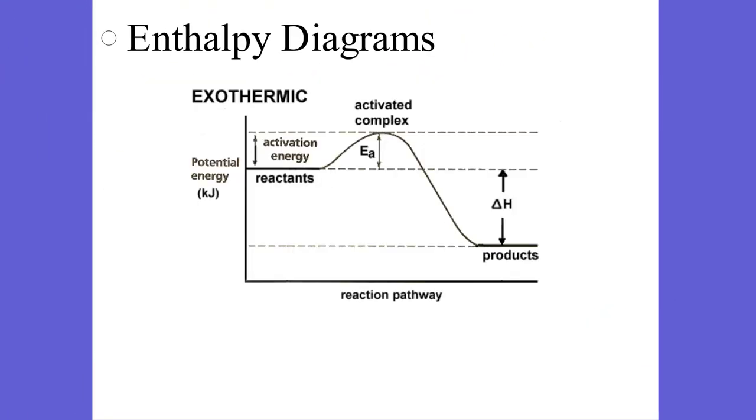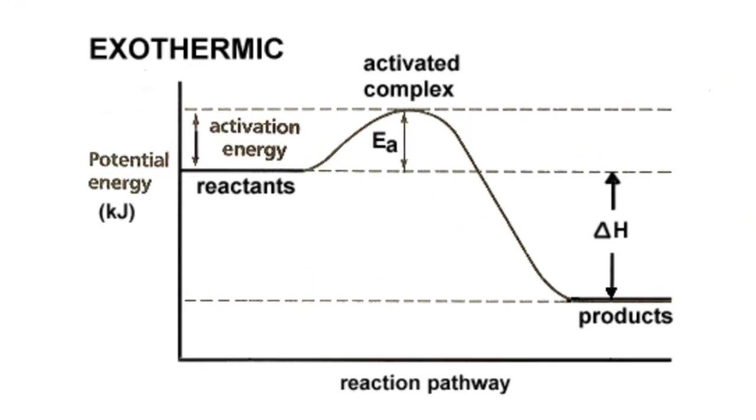The last thing is enthalpy diagrams. You've seen these before. You can see reactants, that positive activation energy to break bonds given the correct amount of energy and the right orientation. And then it releases energy. That activated complex is when it's all in terms of our atoms. Very high potential energy. And then it goes down. And the difference between the products minus the reactants, like in the heats formation, is the enthalpy.